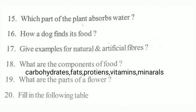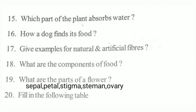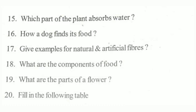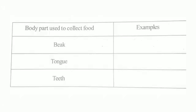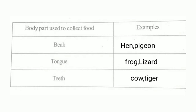What are the components of food? Carbohydrates, fats, proteins, vitamins, and minerals are the components of food. What are the parts of a flower? Sepal, petal, stigma, stamen, and ovary. Fill in the blanks — body parts used to collect food: hen and pigeon collect with the beak; frog and lizard collect with the tongue; cow and tiger collect with teeth.